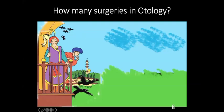You may ask: how many surgeries are there in otology? You may not believe there are nearly 300 types of otological surgeries. But how many do we actually do? We may be doing just 10 to 15 surgeries. But if you want to be a good otologist — not only an otologist but a lateral skull base surgeon — you need to learn all those surgeries. And one thing that can stand with you is radiological knowledge.